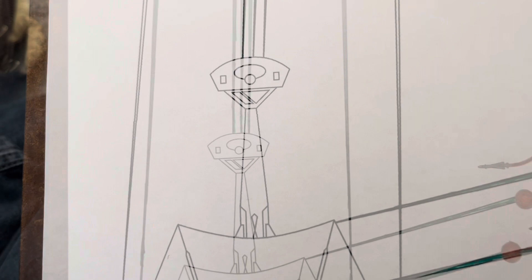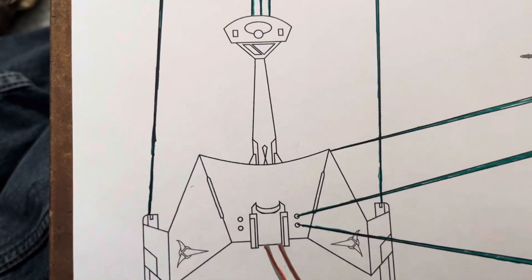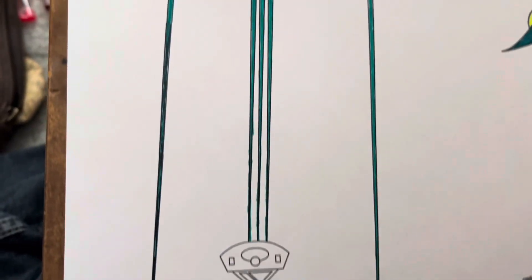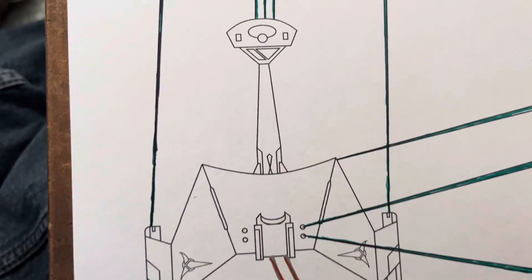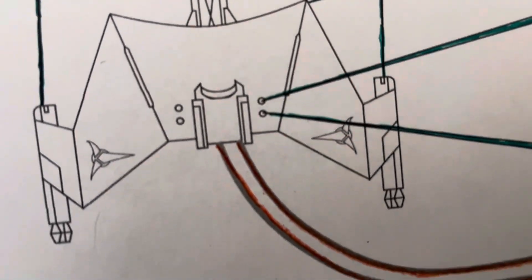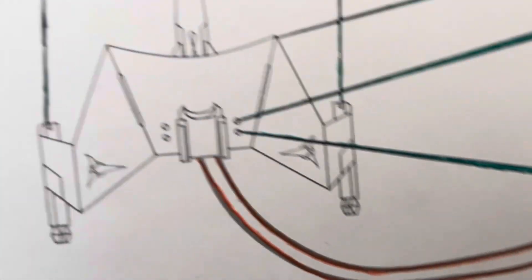Okay, now I've got all the frontal disruptors coming out of the ship, and now it's time to start coloring the ship itself.